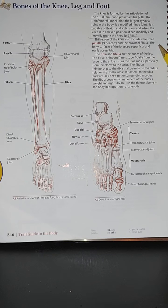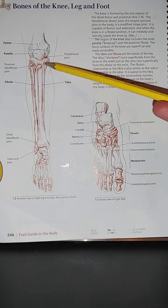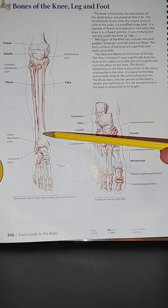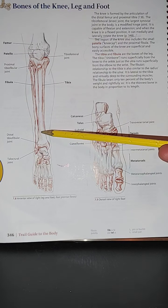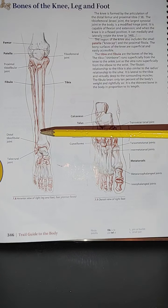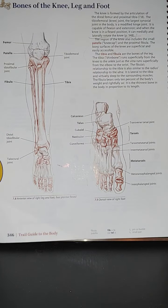The bony surfaces of the knee are superficial and easily accessible. The tibia and fibula are the bones of the leg. The tibia, or shin bone, runs superficially from the knee to the ankle, just as the ulna runs superficially from the elbow to the wrist. The fibula's relationship to the tibia is similar to the radius's relationship to the ulna — it is lateral to the tibia and virtually deep to the surrounding muscles.